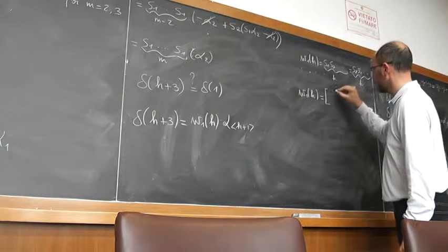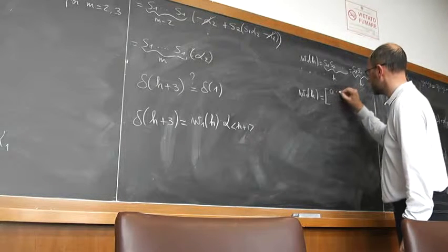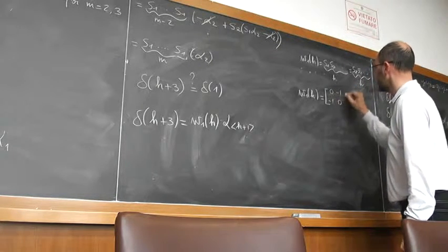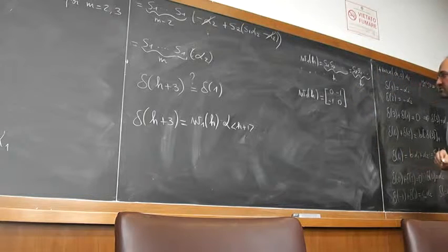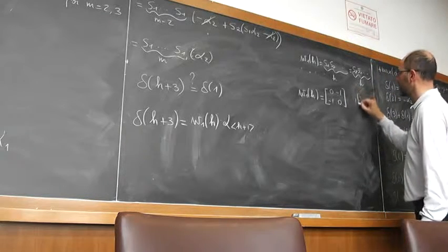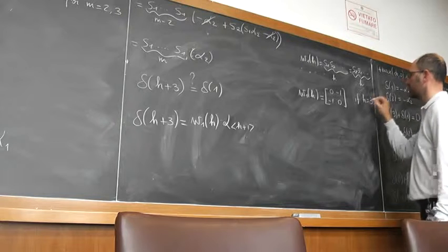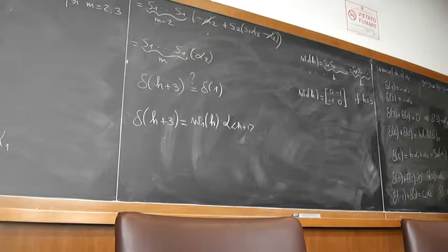This is 0, minus 1, minus 1, minus 1, 0. In the case H equals 3, which was type A2.